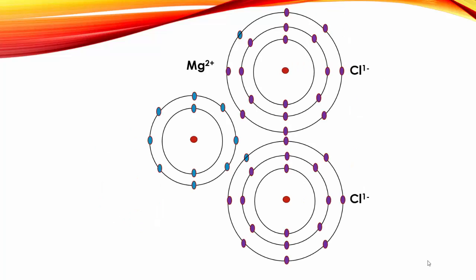They attract each other and we have one magnesium and two chlorines and that would be written as MgCl2 or magnesium chloride.